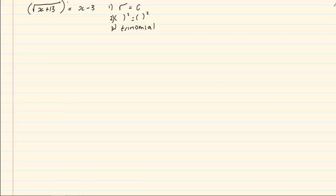Once we square both sides you will see that you end up with a standard trinomial. So we've got the root on one side of the equal sign and x minus 3 on the other side. We square both sides. The square cancels out with the root leaving us with x plus 13 is equal to.